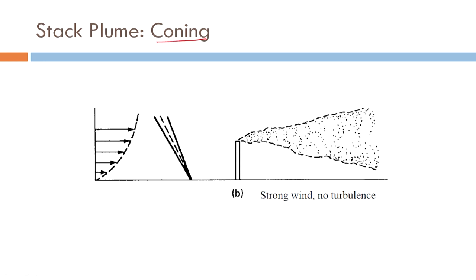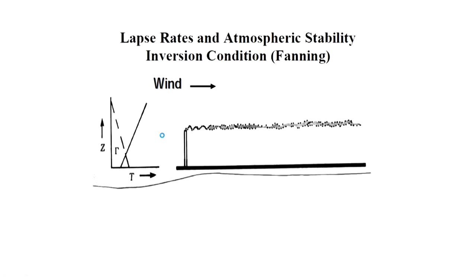So, coning. I have two sets of figures, one better than the other. Strong wind and no turbulence — the wind profile and the packet of air is somewhere between these temperature profiles. That is why we have this, with weak lapse rates and atmospheric stability.